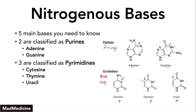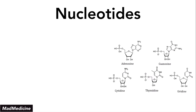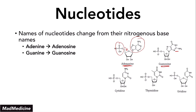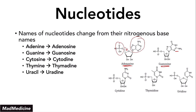Now let's talk about nucleotide naming. The names change from the nitrogenous base names. Adenine becomes adenosine. Guanine becomes guanosine. Cytosine becomes cytidine. Thymine becomes thymidine. And uracil becomes uridine. The purines have the suffix '-sine' and the pyrimidines have the suffix '-dine.'